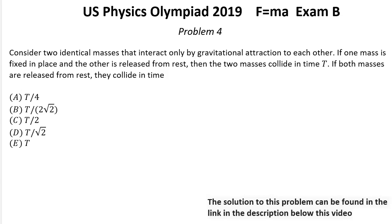Problem number 4. Consider two identical masses that interact only by gravitational attraction to each other. If one mass is fixed in place and the other is released from rest, then the two masses collide in time t.